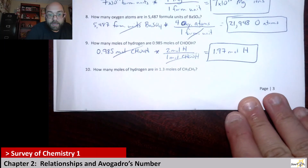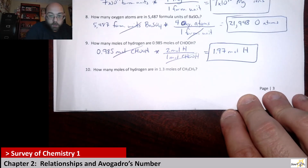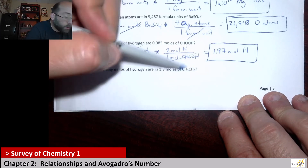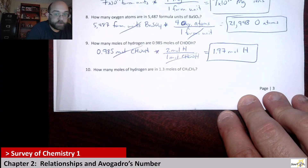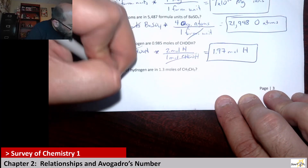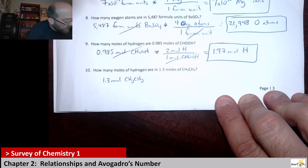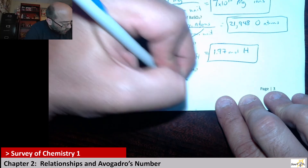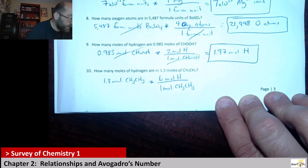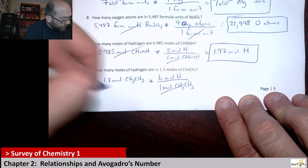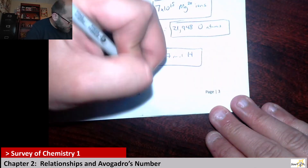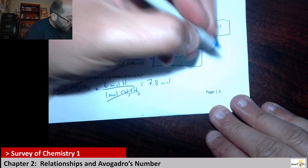And then lastly, number 10: how many moles of hydrogen are in 1.3 moles of CH3CH3? There are 6 hydrogen atoms in 1 molecule, so it's like saying there are 6 moles of hydrogen in 1 mole of this compound. So 1.3 moles of CH3CH3 means 6 moles of hydrogen per 1 mole of the formula — it's just 6 times 1.3, which is 7.8 moles of hydrogen.